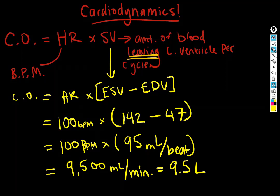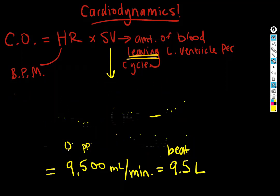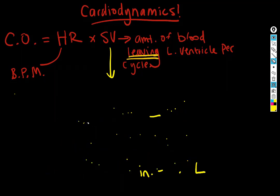Now let's also consider ejection fraction. ESV minus EDV is one way to calculate stroke volume, but there are others. On a practice question I could give you stroke volume and ESV and you'd use subtraction to find EDV, or vice versa — make sure you're comfortable manipulating these terms. ESV and EDV are one way to calculate stroke volume; ejection fraction is another related measurement.